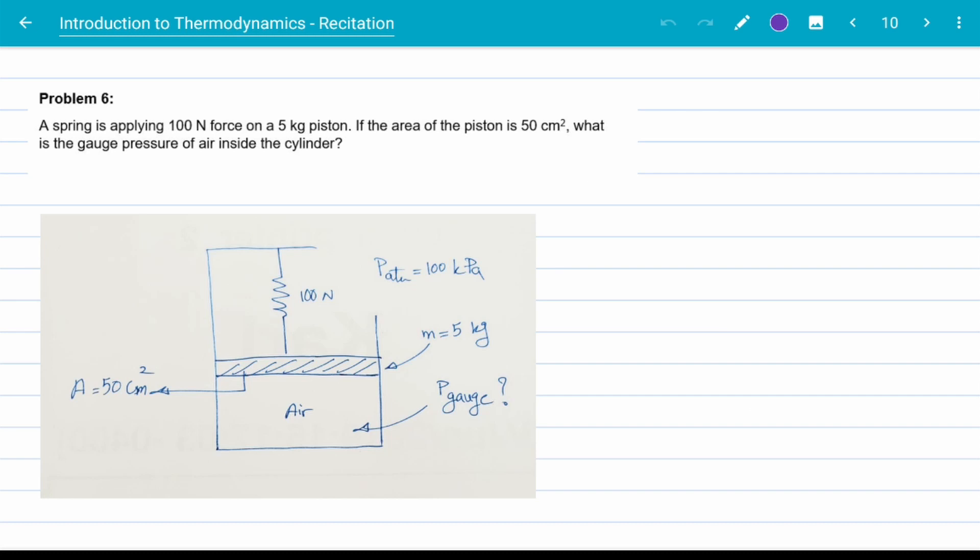Okay, problem six. We have some air trapped inside a piston and a cylinder. The piston itself is 5 kilograms, and there is also a spring that is pushing the piston down with a force of 100 newtons. Area of the piston is known. Problem asks, what is the air gauge pressure?